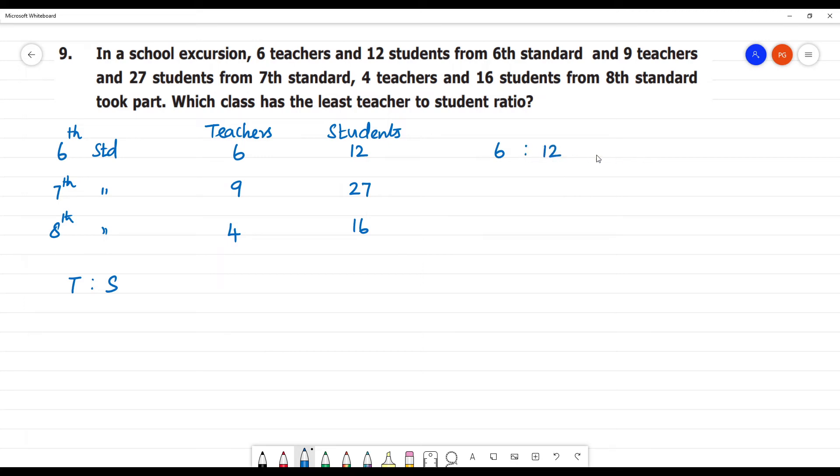This can be written in simplest form. Divide by 6. Both divide by 6. 1 is to 2. So, 6th standard ratio, 1 is to 2.